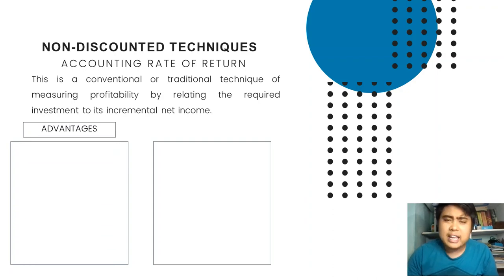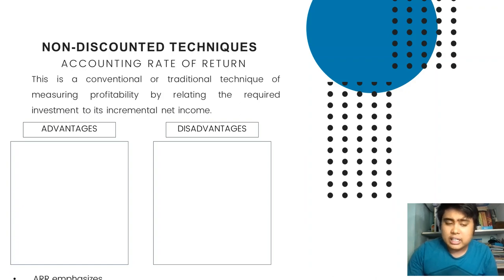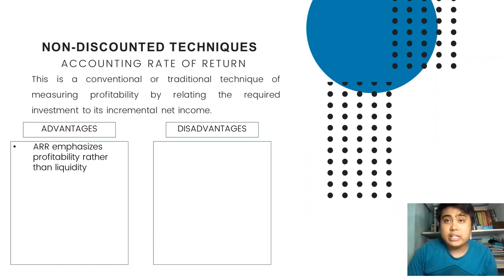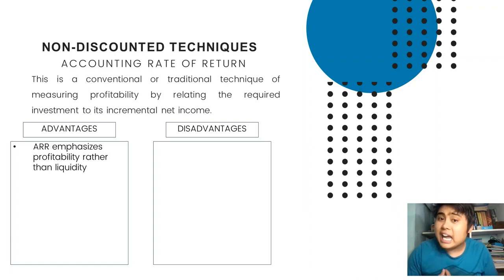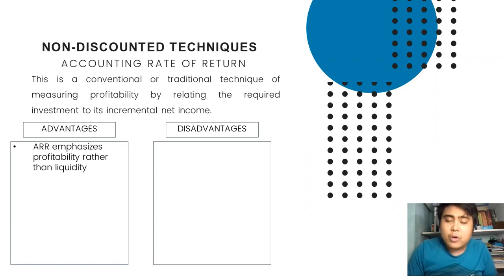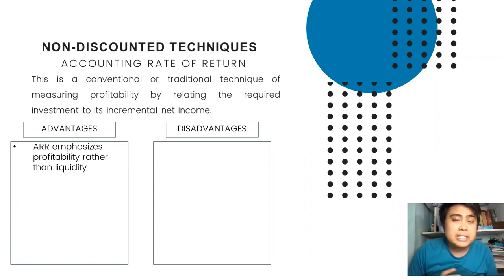The first advantage of ARR is that it emphasizes profitability rather than liquidity. You will notice later that some techniques focus on liquidity while others focus on profitability. When the focus is profitability, the concern is how much will I earn from the investment. When the focus is liquidity, the concern is how long before I get my money back.